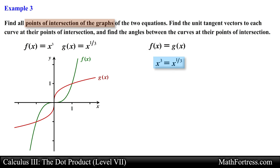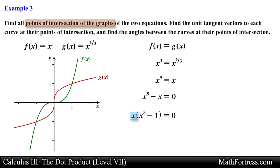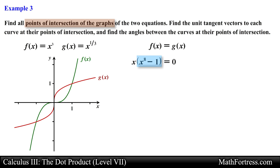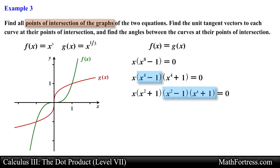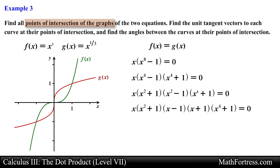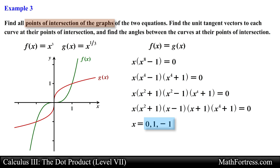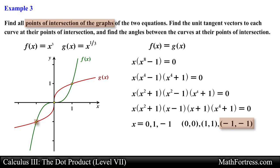We set the functions equal to one another, then cube both sides to eliminate the fractional power. We set the equation equal to zero and factor out x. Identifying a difference of squares, we factor the binomial accordingly, then factor out the remaining difference of squares. Using the zero product property, we find three solutions: x equals zero, one, and negative one. So the points of intersection are (0, 0), (1, 1), and (−1, −1).